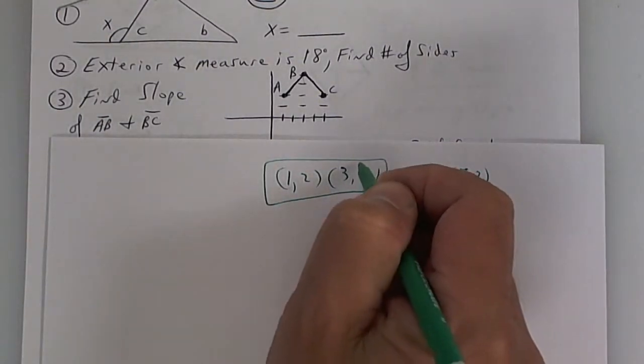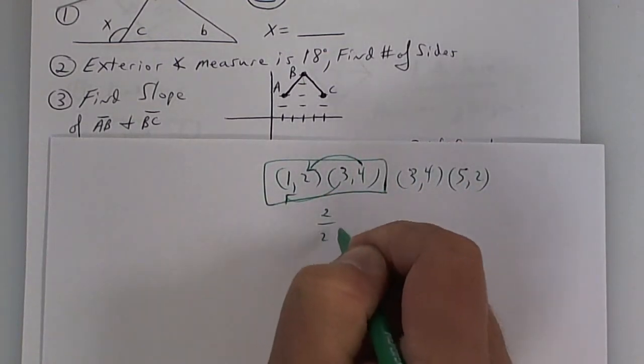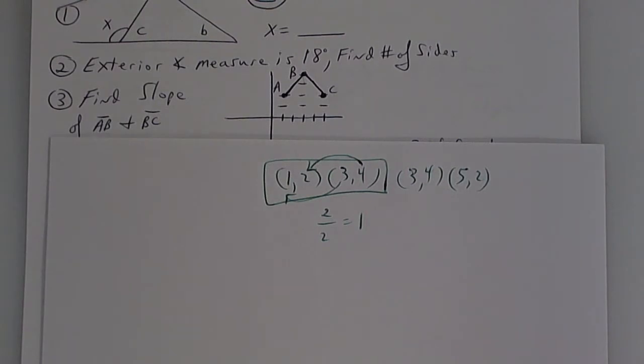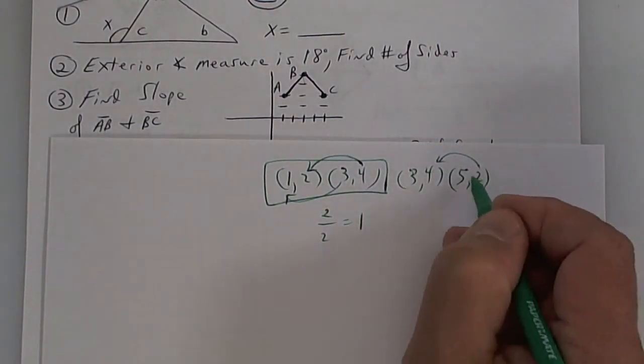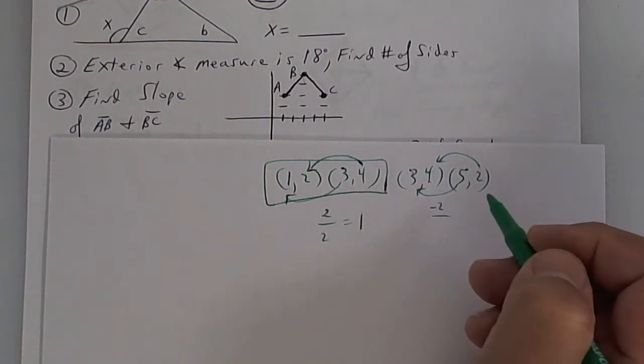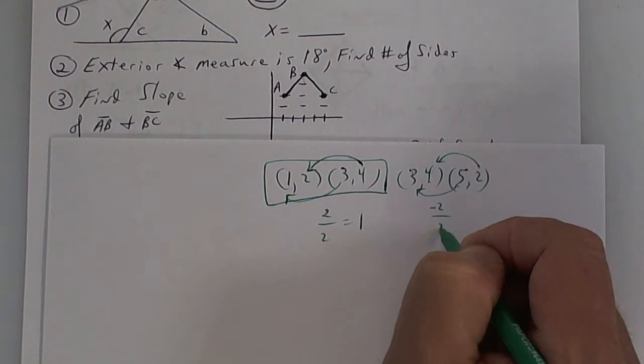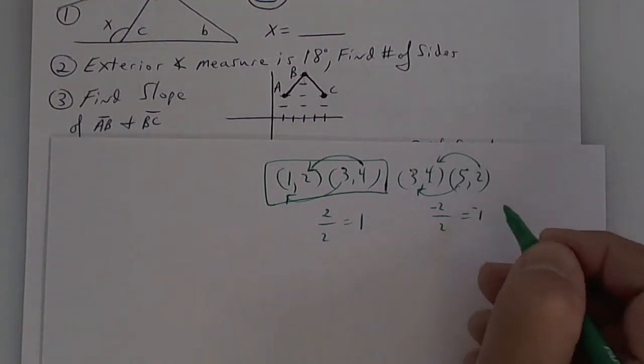If you have trouble finding the points, you don't have a chance. But here are the points. Now you've got to find slope. This one is 4 minus 2 is 2, 3 minus 1 is 2. So the slope is 1 for that one, 1 over 1. This one is 2 minus 4, which is negative 2, and 5 minus 3 is 2. So what I get here is negative 1.